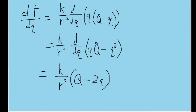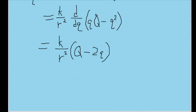Now when we maximize a function in calculus, we set the function equal to 0. So I will do that here. And now we must find what small q has to be for this to be equal to 0.